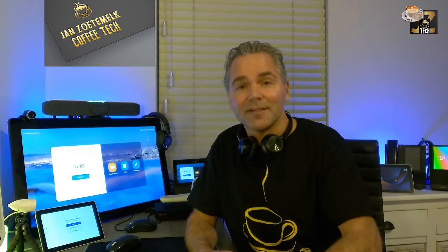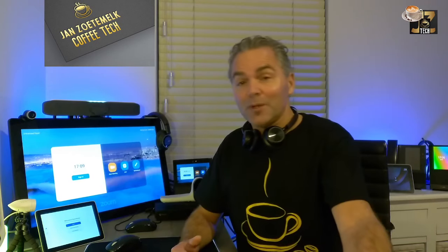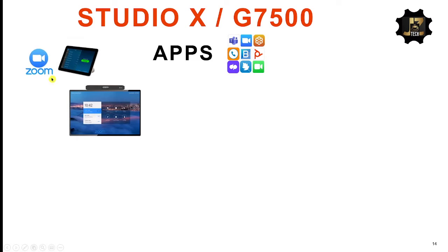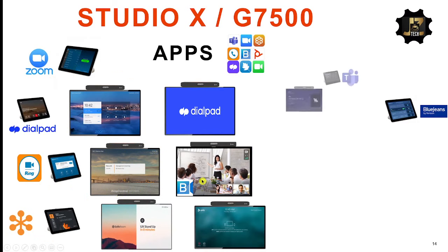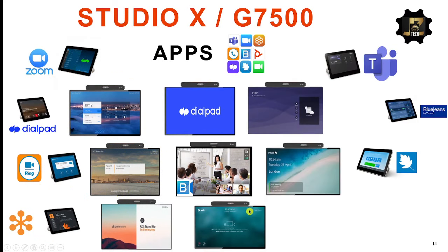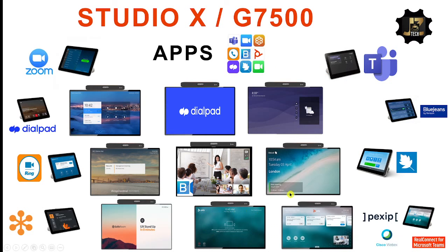Welcome back to a brand new Coffee Tech Break with Jan. We've got all those great applications running on Studio X and G7500. Let me quickly show them: Zoom, RingCentral, GoToRoom, Dialpad, BlueJeans, Device Mode, Teams, Starleaf, and the Poly mode which uses H.323 SIP to connect to a Pexip SIP environment or a Cisco WebEx environment. If you want to use Teams, you can also use RailConnect for Teams.